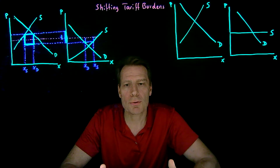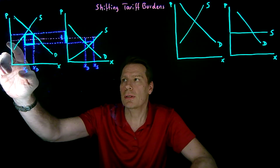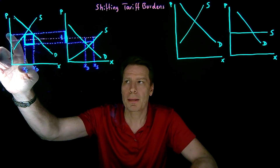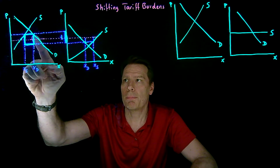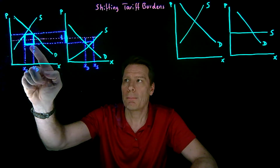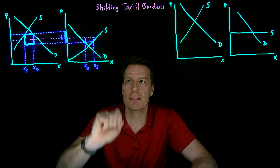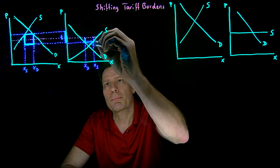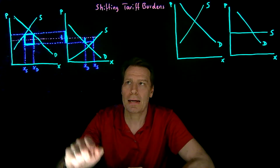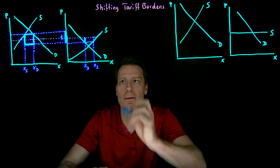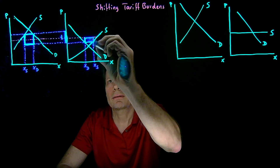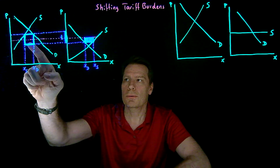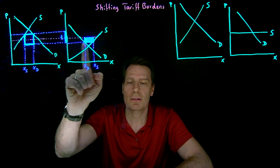Only a portion of that revenue is collected within the importing country — the portion due to the increase in price in that country. The other portion is collected in the exporting country due to the decrease in price there. The upper portion is collected in the importing country, but the lower portion is collected elsewhere. This lower box equals the lower half of the tax revenue box, and represents the portion of the tariff burden that's been shifted to the other country.